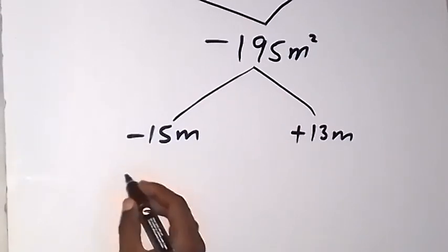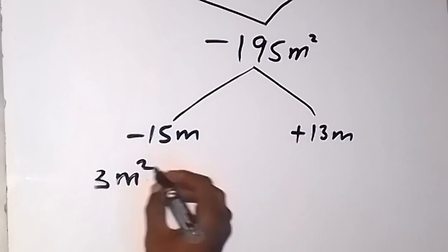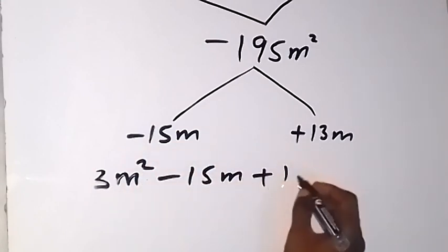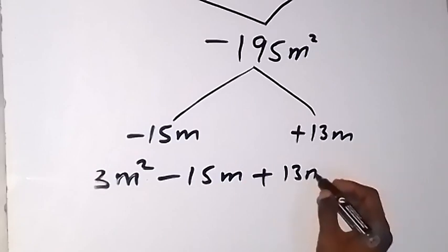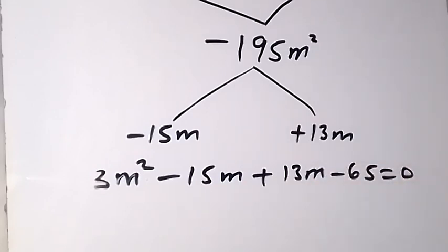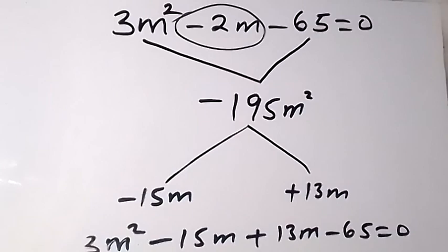So this will now become 3m² - 15m + 13m - 65 = 0. What we did there is we just replaced -2m with -15m + 13m.